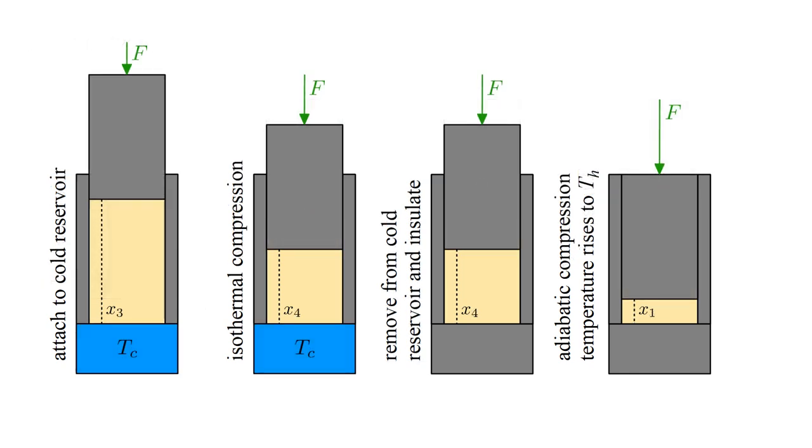The gas is put in contact with a reservoir at temperature T cold and isothermally compressed, which converts work into heat transferred to the reservoir. The reservoir is removed and the gas is insulated. Then the gas is adiabatically compressed until its temperature is T hot. Now the cycle can be repeated.